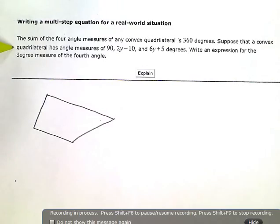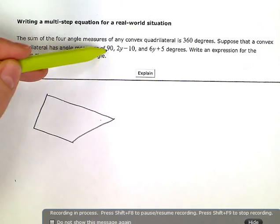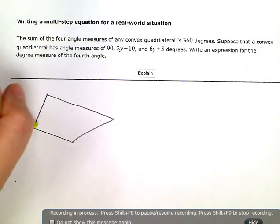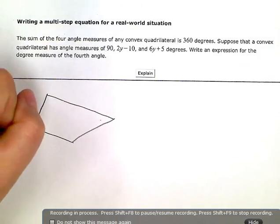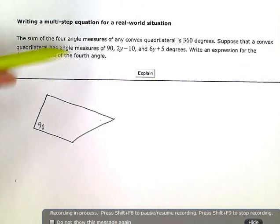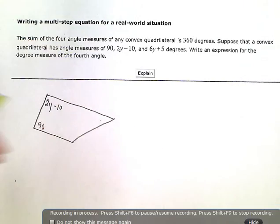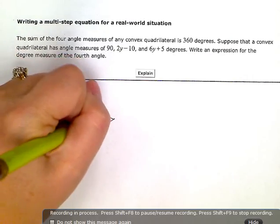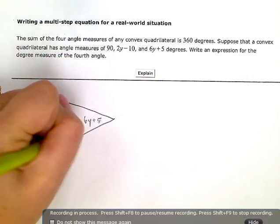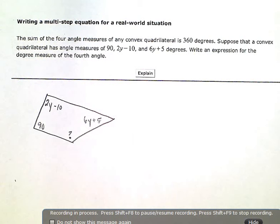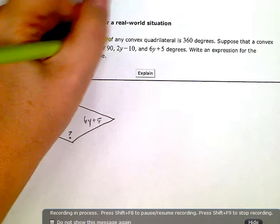Then it tells me, suppose that a convex quadrilateral has angle measures of 90. I'm going to put my 90 here. That one looks the closest to a right angle. 2y minus 10. And 6y plus 5. I don't have any information for the fourth angle, the last one. Just these three. 1, 2, 3.